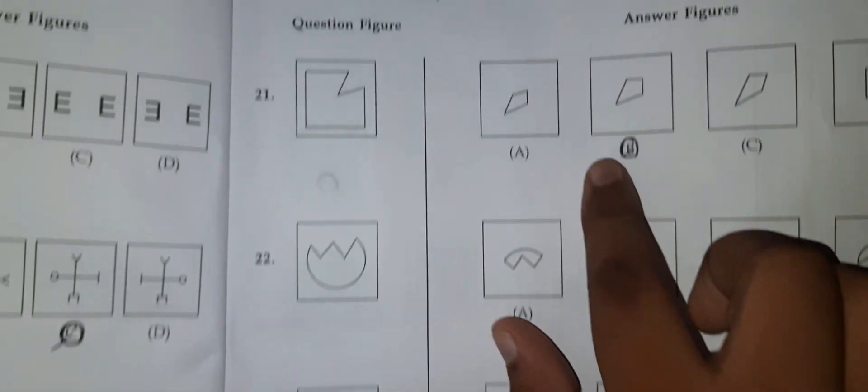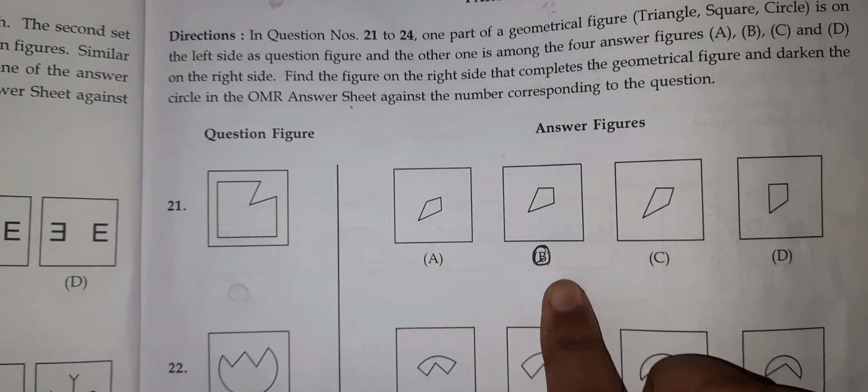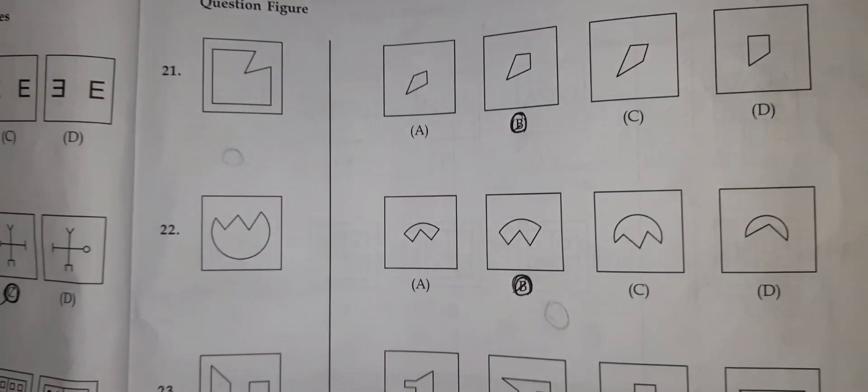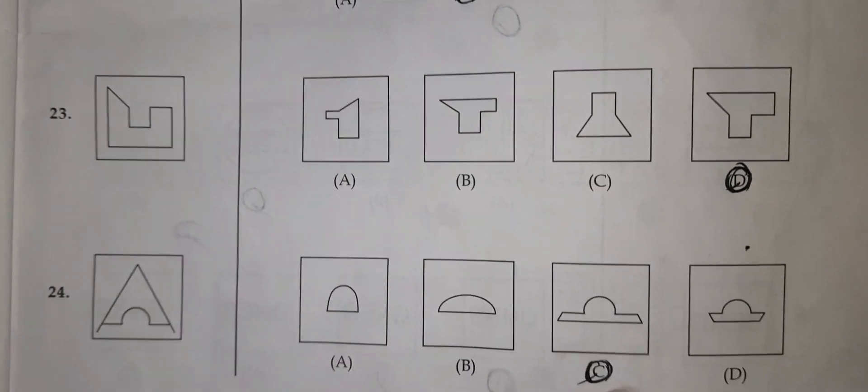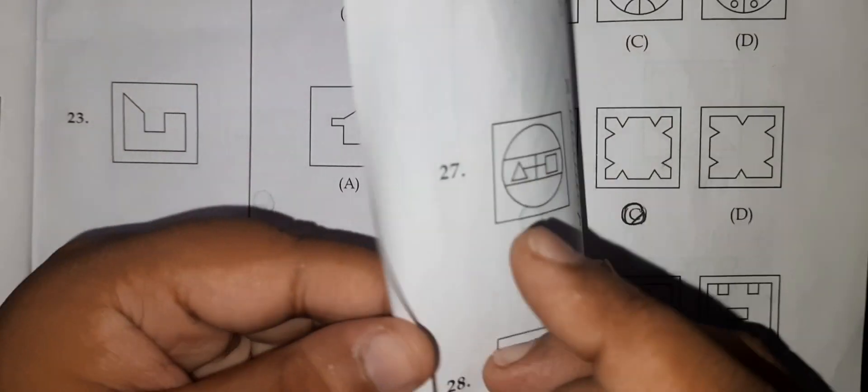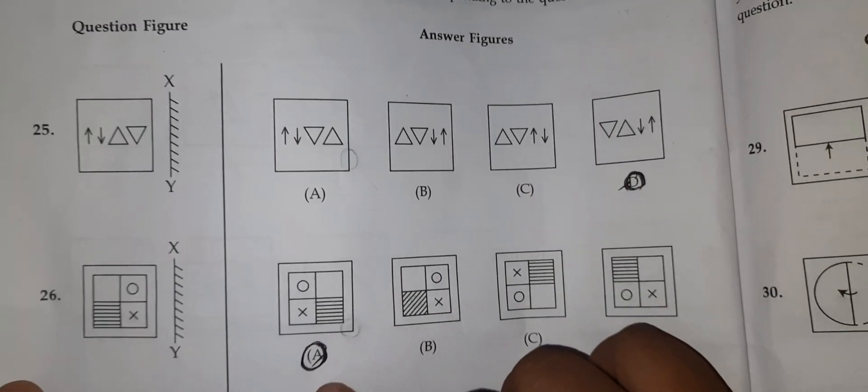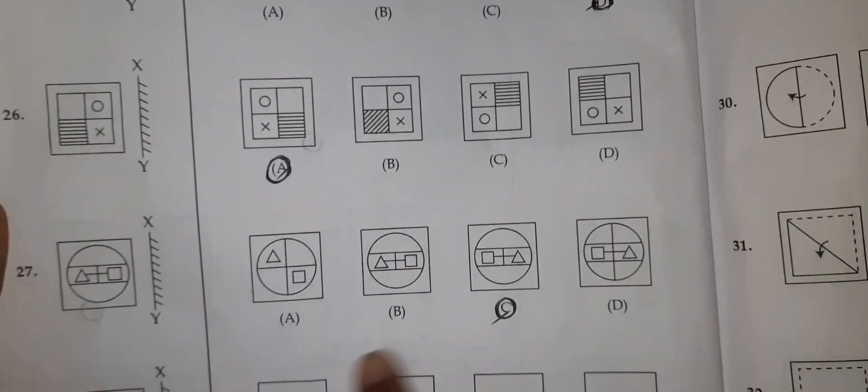21st option B. 22nd option B. 23rd option D. 24th option C. 25th option D. 26th option A. 27th option C.